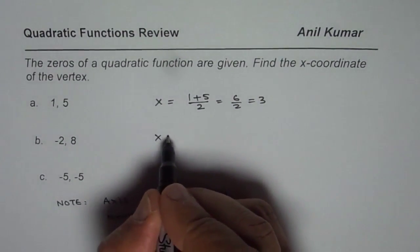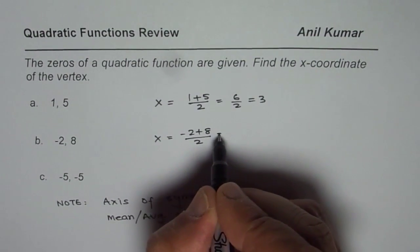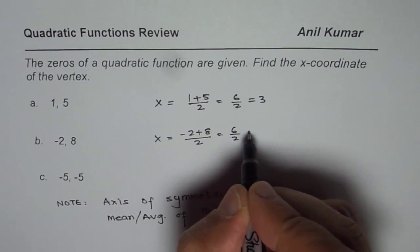In this case, it should be x equals -2 plus 8 divided by 2, that is 6 divided by 2 equals 3.